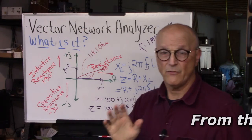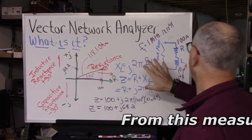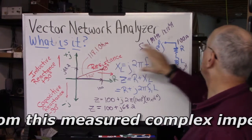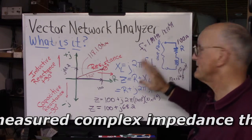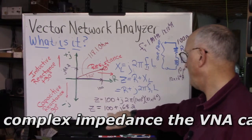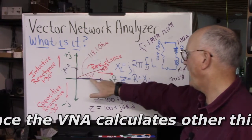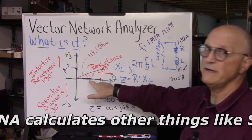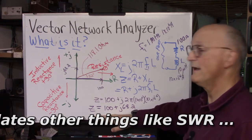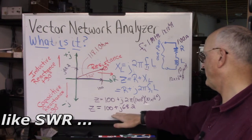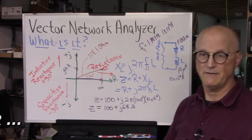And so the vector network analyzer will look in here and it will be able to see that this network has an impedance of 118.1 ohms at an angle of 32 degrees or it will report this for you, nice and neat and simple, 100 plus j 68.2.